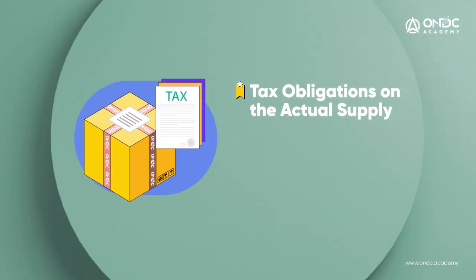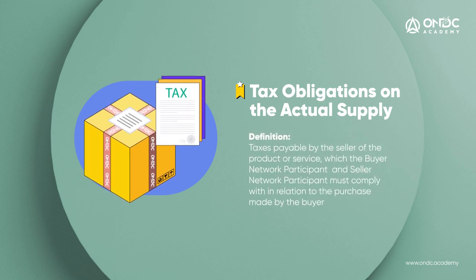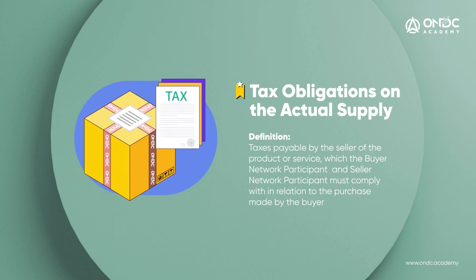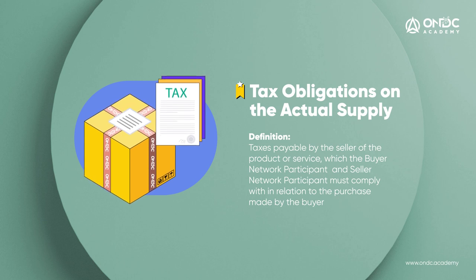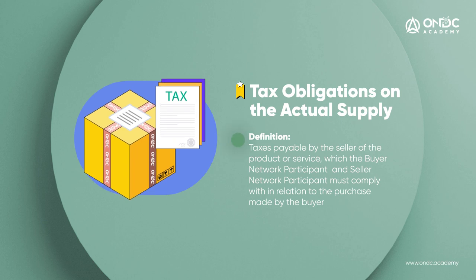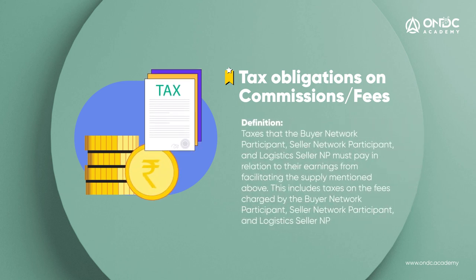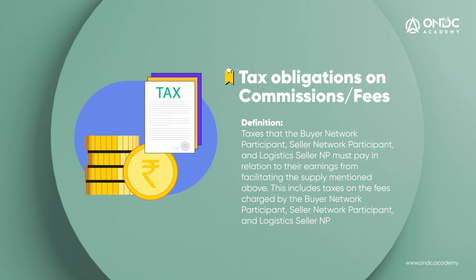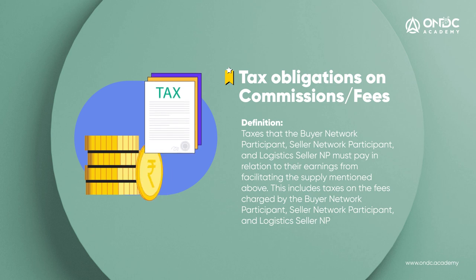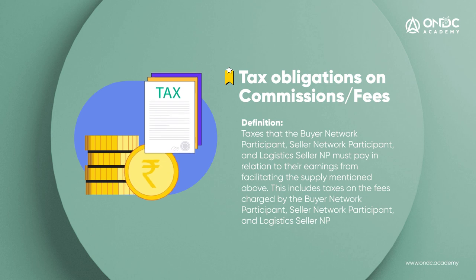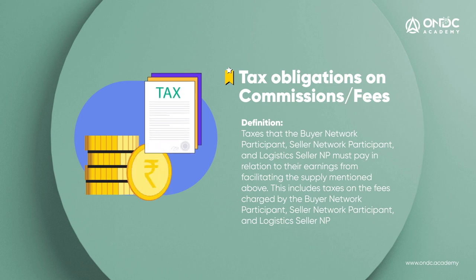The first type is tax obligations on the actual supply. When a buyer purchases something from a seller on the ONDC network, the buyer network participant and seller network participant must ensure that the seller pays the required taxes on the transactions correctly and on time. The second type is tax obligations on commissions and fees — the taxes that the buyer network participant, seller network participant, and logistics seller network participants must pay on the fees they earn for facilitating the transaction.